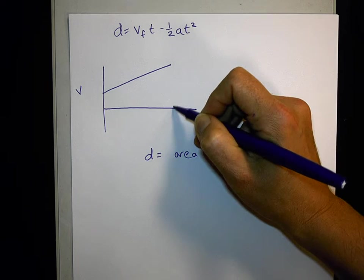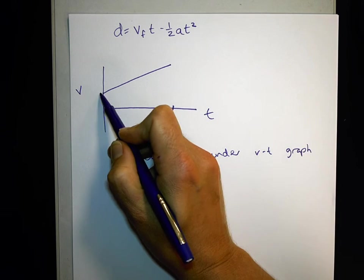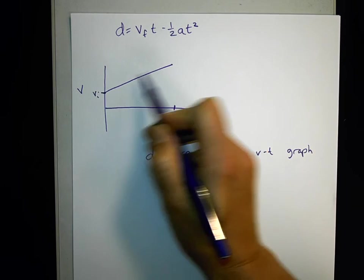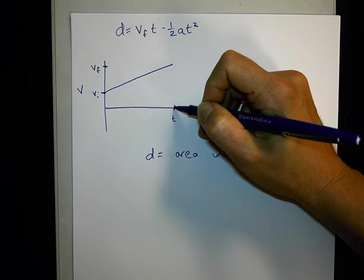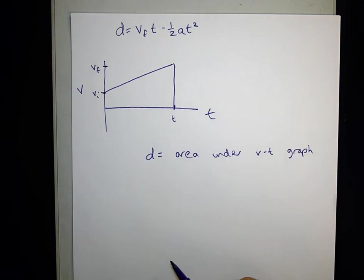So basically, I'm looking for if this is t seconds, if this is my starting velocity, my initial velocity, and this is my ending velocity, my final velocity, I'm looking for a way to say what this trapezoidal area is.